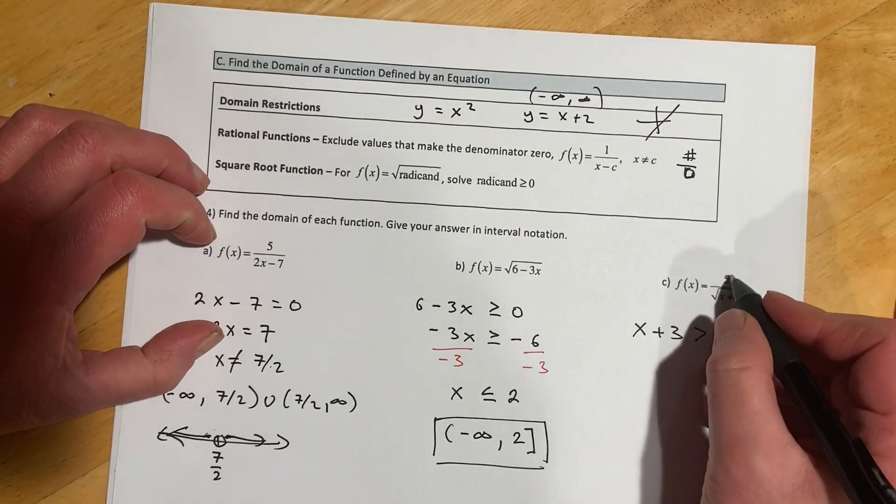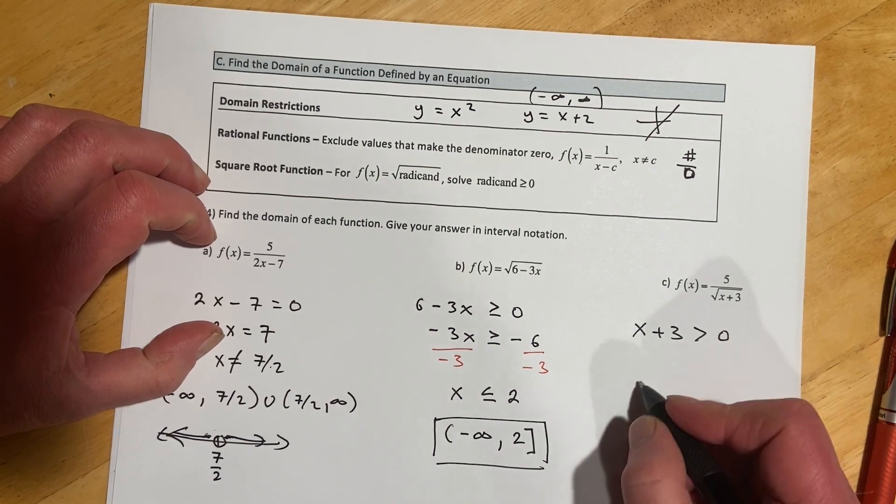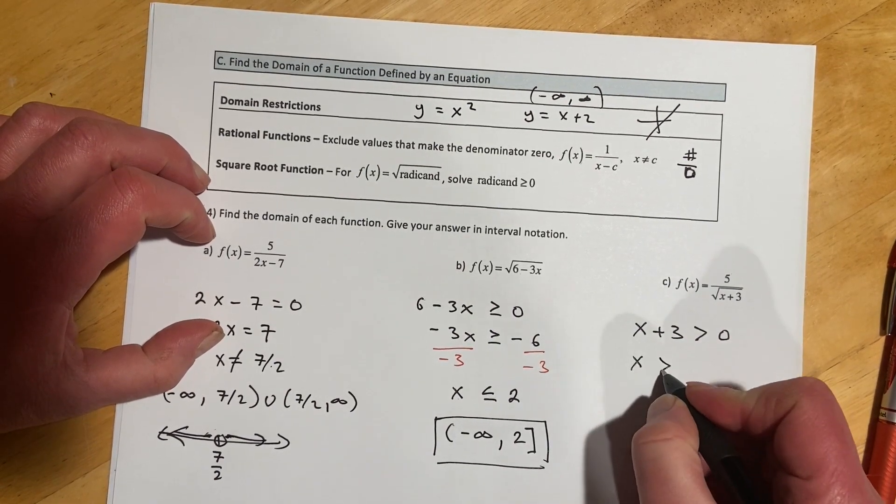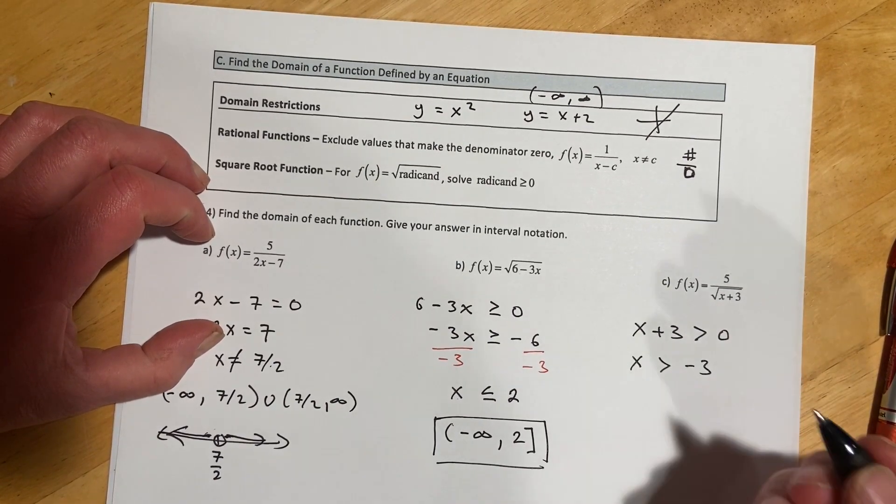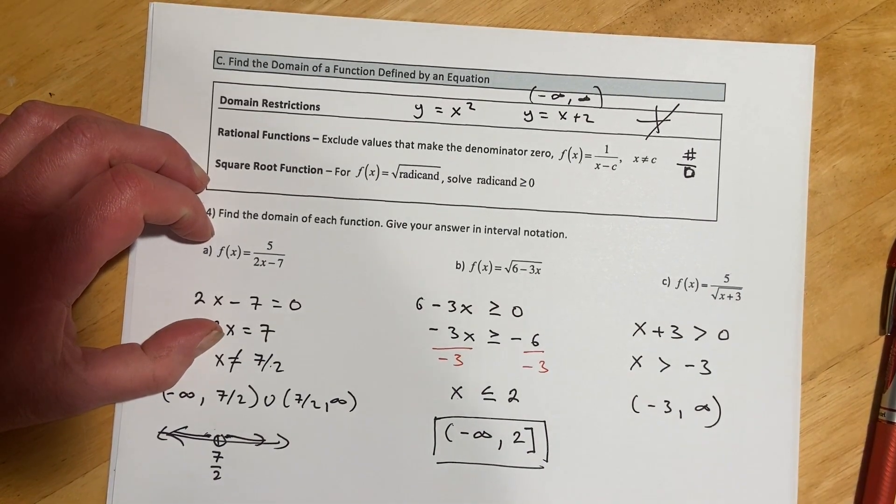except it can't be equal to 0 this time because that radical happens to be in a denominator. So here I'll just move my 3 over and get x is greater than negative 3, or in interval notation, negative 3 to infinity.